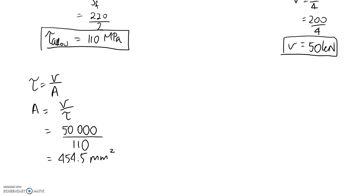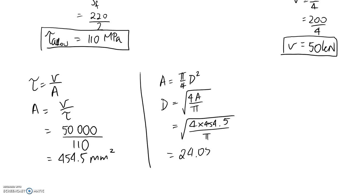The final step is just converting this into a diameter. We know that area is equal to π/4 multiplied by your diameter squared. Rearranging this equation and substituting in, we find out that we need a diameter of about 24.05 millimeters, or if we round it up, it's about 25.